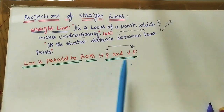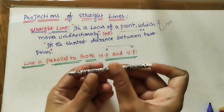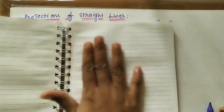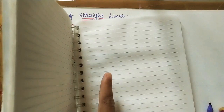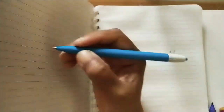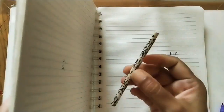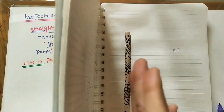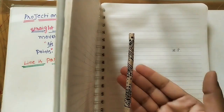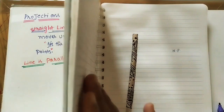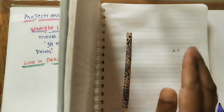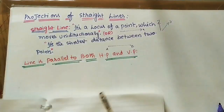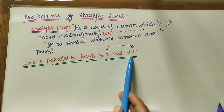Take the first condition: the line is parallel to both HP and VP. I will show one example. This is the line — it has some length and two ends. This is the horizontal plane and this is the vertical plane, kept at right angles to each other. I am placing one straight line at some distance from the horizontal plane and some distance from the vertical plane. This line is parallel to both HP and VP.